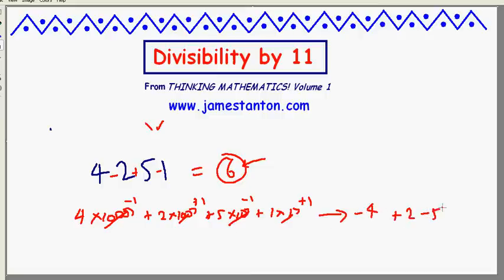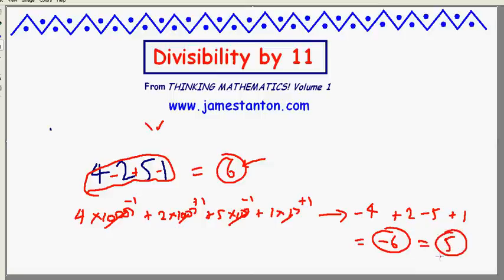It's actually the same remainder as negative 4, plus 2, minus 5, plus 1, which I'm afraid is actually now negative 6. So upon division by 11, this number actually leaves a remainder of negative 6. That's the same thing as saying a remainder of 5.